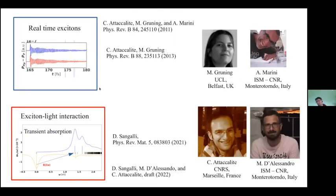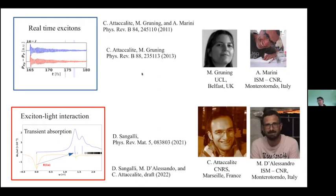I now move to another part: how we can detect excitons created by a laser pulse via the transient absorption signal — what I call exciton-light interaction. For describing this kind of experiment, I still rely on the real-time propagation in the Yambo code, but in particular it is important to use the theory of the Berry phase polarization out of equilibrium. The reason is that in these experiments, one detects a signal beyond the linear response regime, and the Berry phase formulation is needed for that.